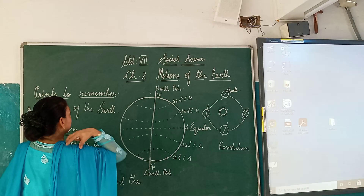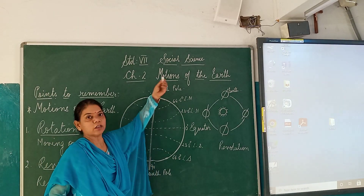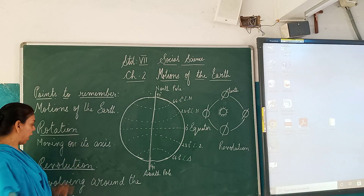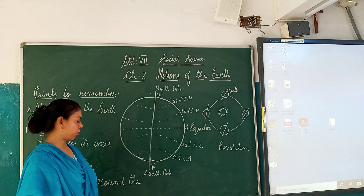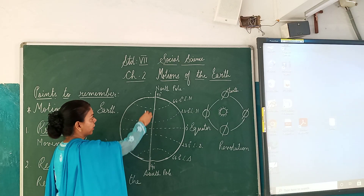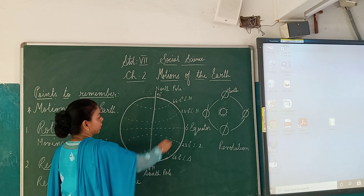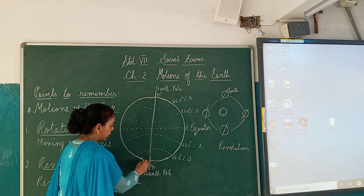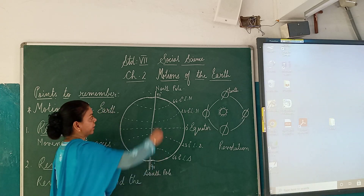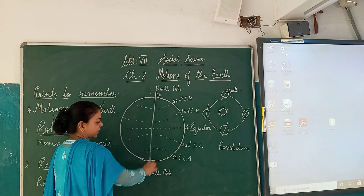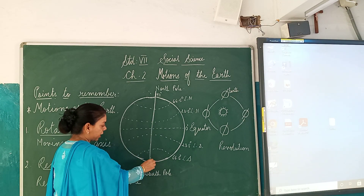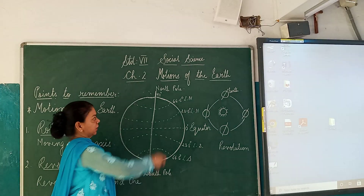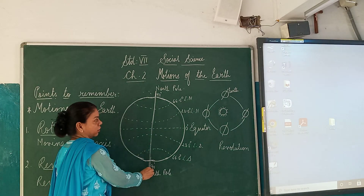We will be learning about the motions of the earth. How many motions of the earth are there? The first one is rotation and the second one is revolution of the earth. You all know children, this is the picture — the drawing of the earth. It is tilted slightly at the north pole and the south pole and it is moving on its axis. This is the axis of the earth.